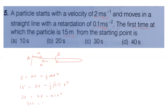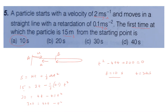This gives t squared minus 40t plus 300 equals 0. Solving this quadratic equation gives t equals 10 seconds and t equals 30 seconds. The first time the particle is at 15 meter displacement is at 10 seconds.